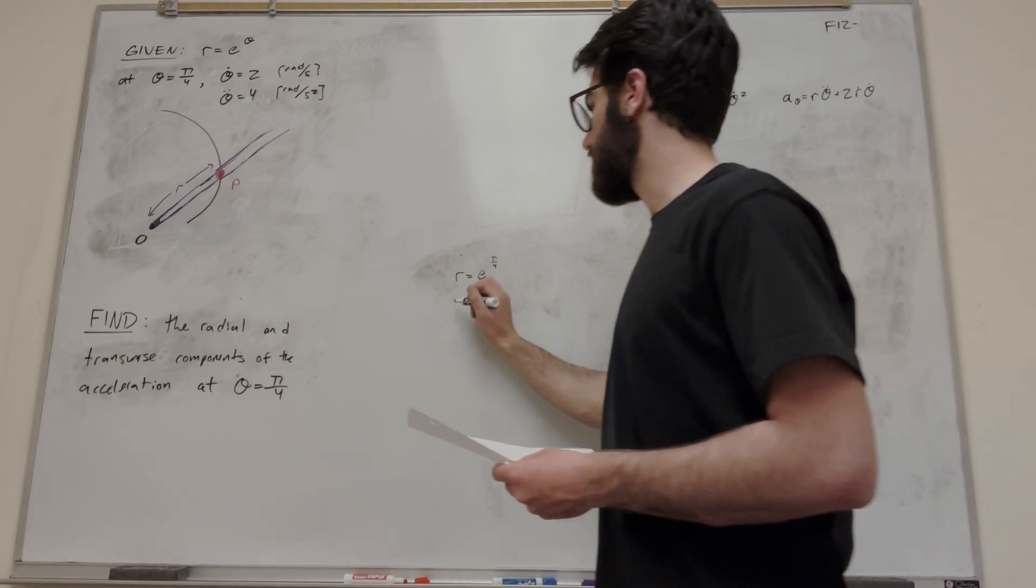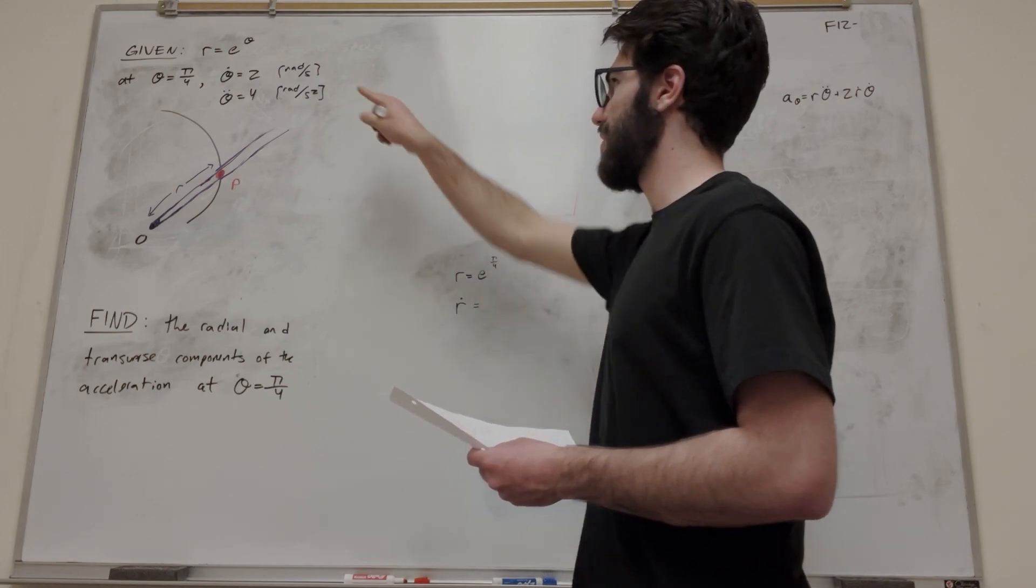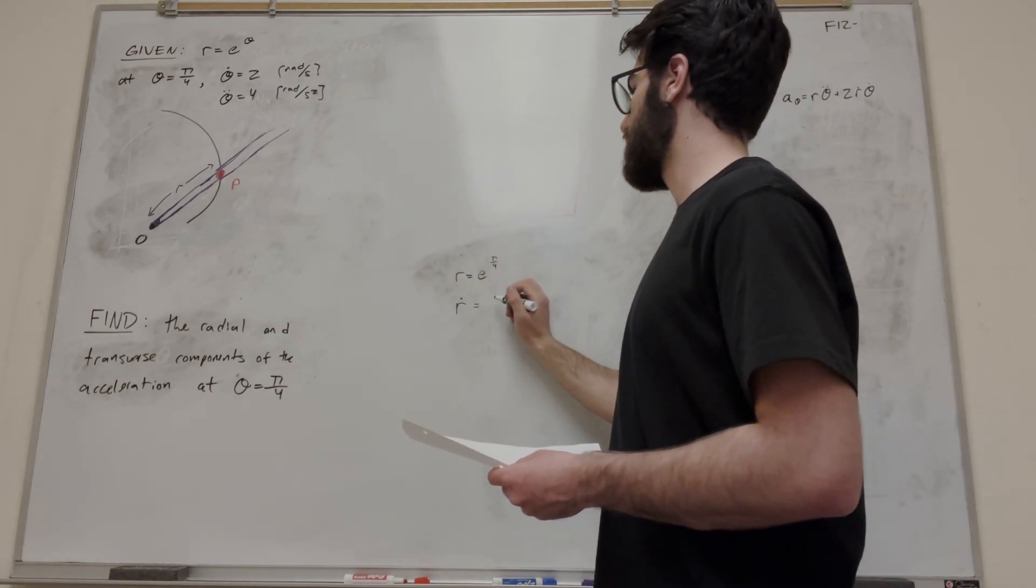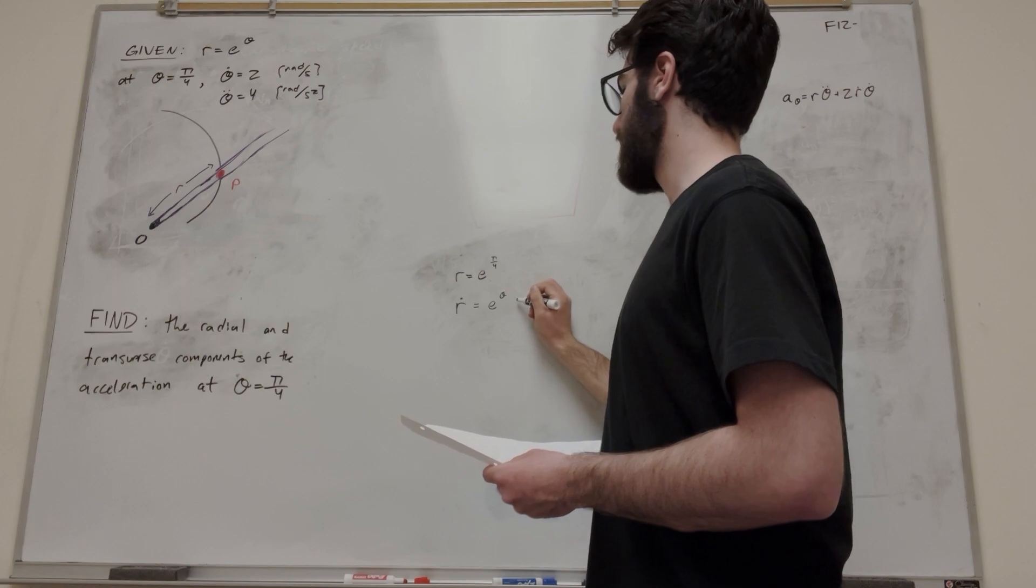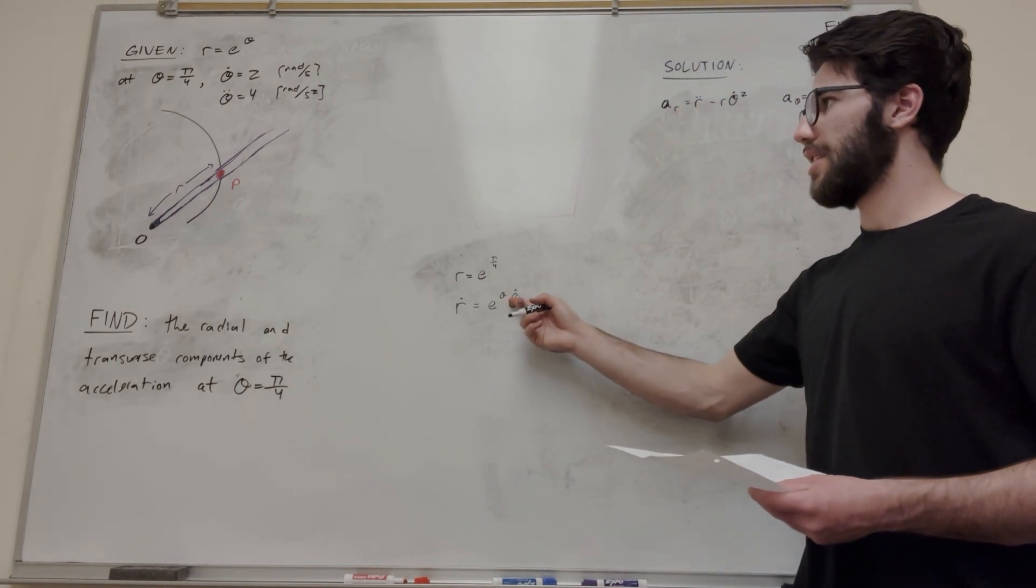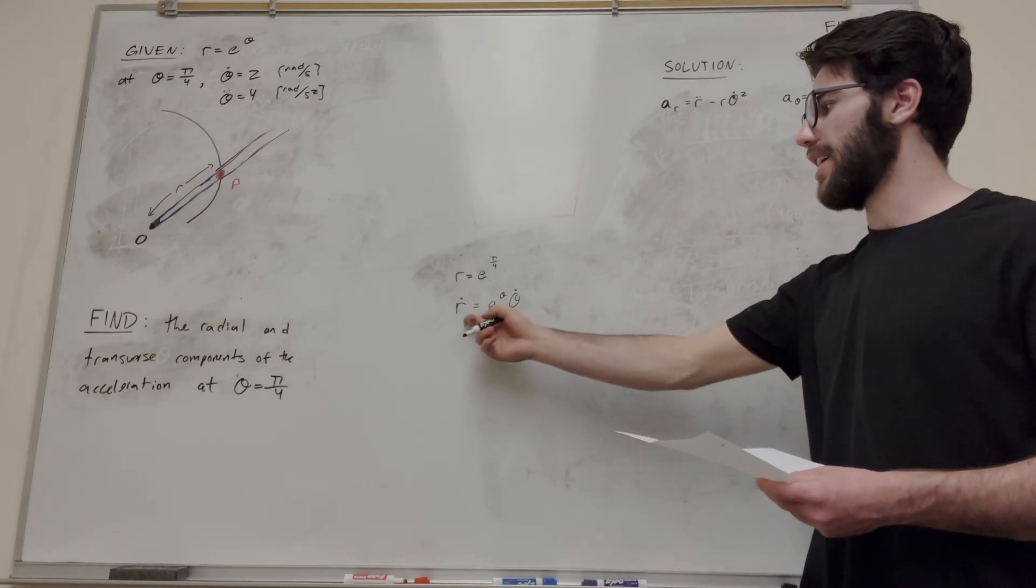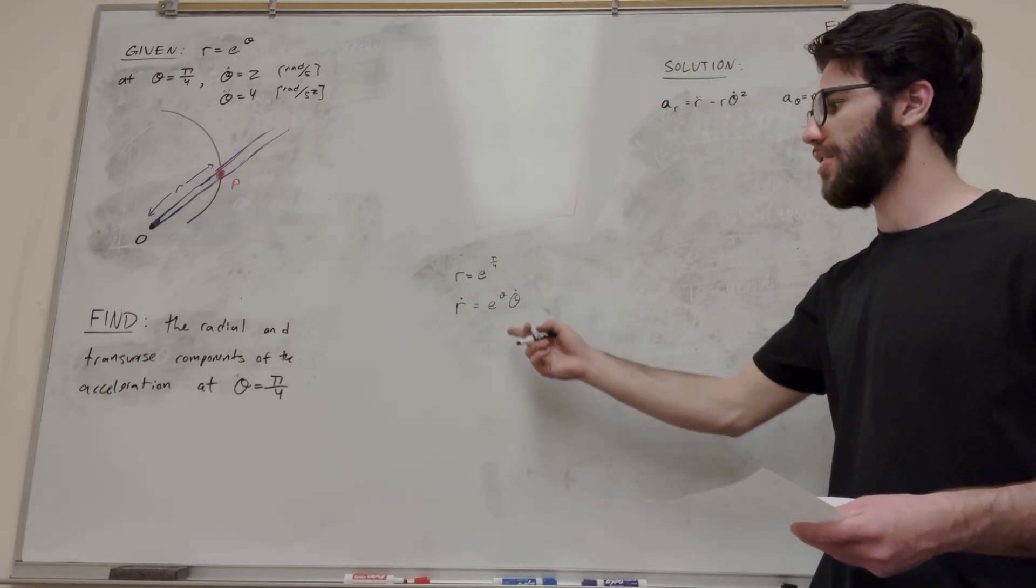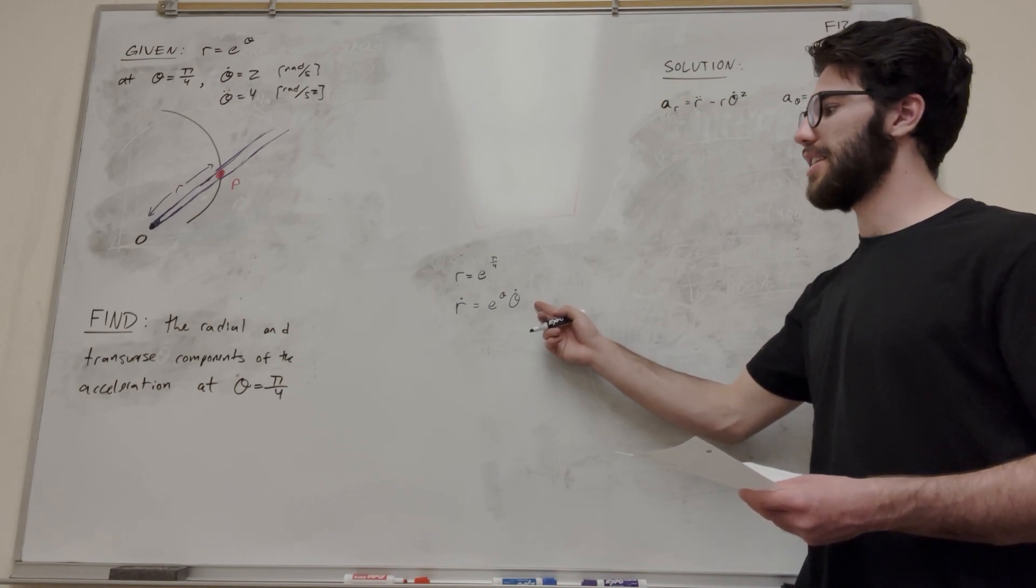So let's have r single dot. Let's take the derivative. So e to the theta is just going to be e to the theta, but then we have to attach a theta dot to this. Because theta is not time, if we're taking a time derivative, we have to make sure to use the chain rule to attach the theta time derivative, d theta dt.